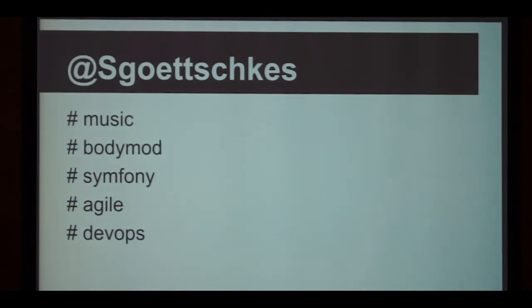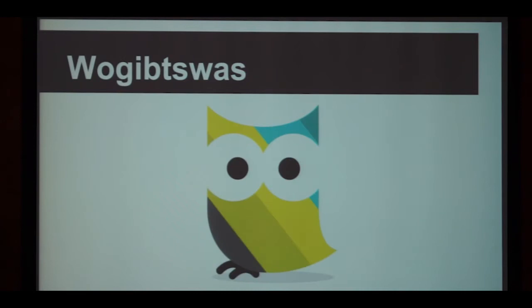Before starting, I'd like to introduce myself. I'm Sebastian. I'm doing project management these days, and also software development in my free time. I'm originally from Munich, Germany, now living in Vienna. Besides music and body modification and all the other stuff, I'm also into Agile and DevOps, which is really why I love Vagrant so much — because Vagrant really is this merging between development and systems engineering and systems administration.